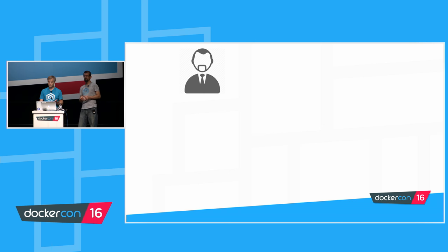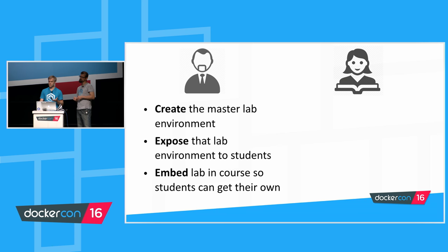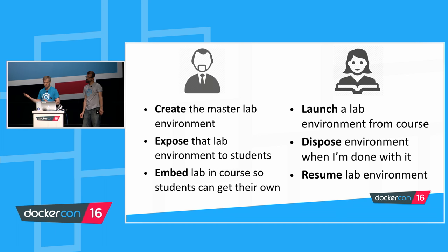The story we just reenacted is similar to a situation we went through a couple months ago. There are three broad groups in this story: Appsembler, the customer, and the user of the product — who's usually the customer of our customer. There's an interface for both the admin user and the end user. A student is somebody who's taking an Open edX course to learn a new piece of software, often writing code related to that technology. The admin user wants to create a master lab environment, expose it to their students, and embed it in a course so students can get their own environment. The student wants to launch that lab, dispose of it when done, and optionally resume it.